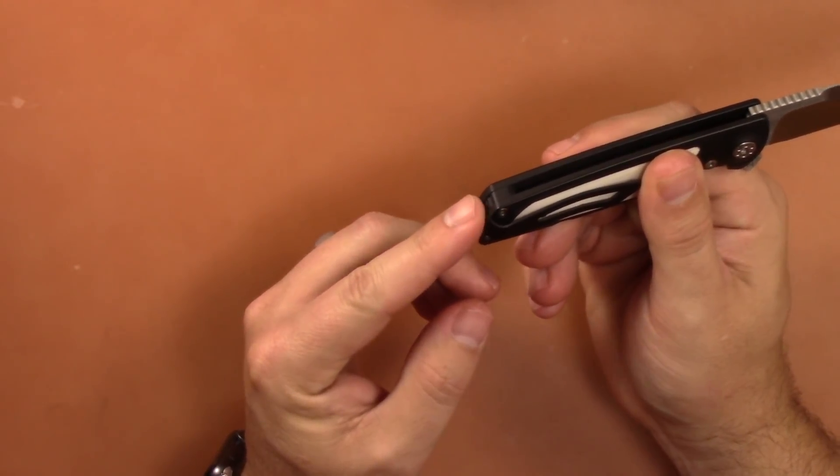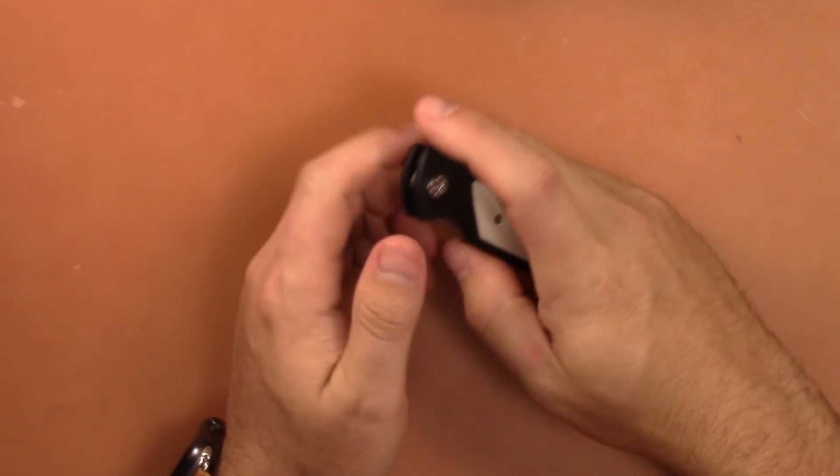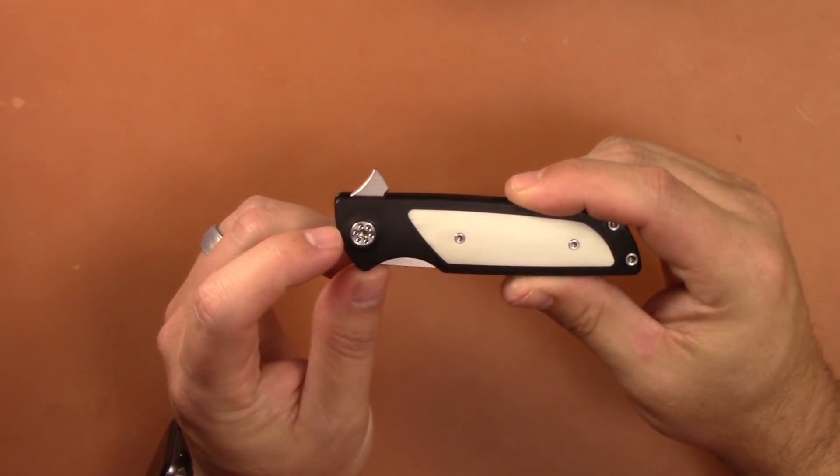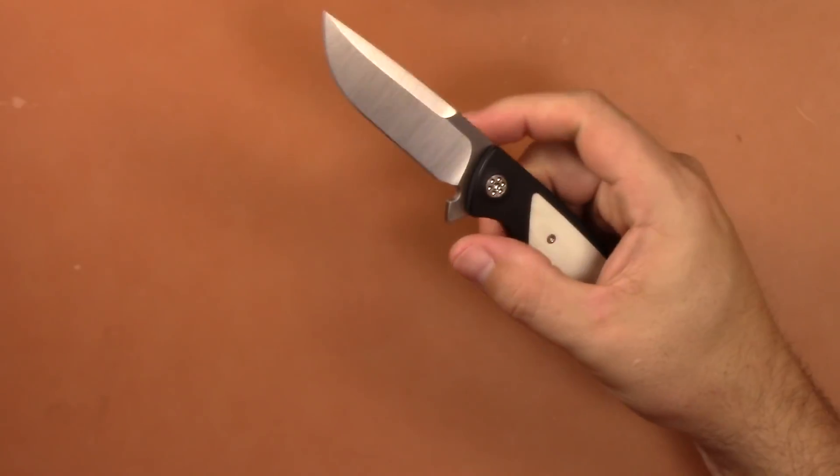You do have a titanium backspacer back here that has a little bit of jimping, but it's so inset in the frame you don't really notice the jimping. It does have a nice custom pivot which is a great touch, and you have stainless steel bearings on this.